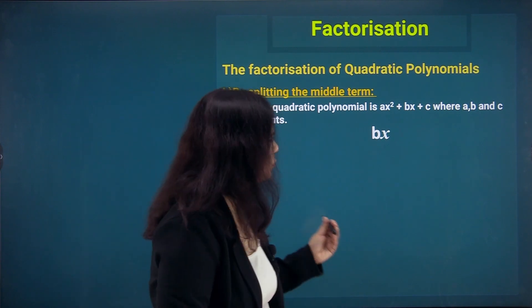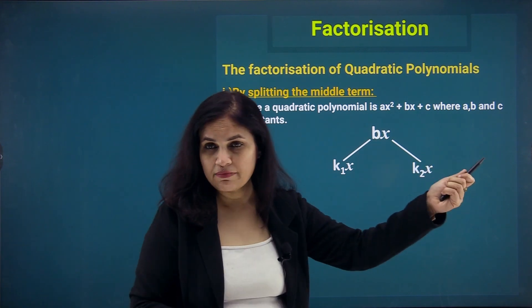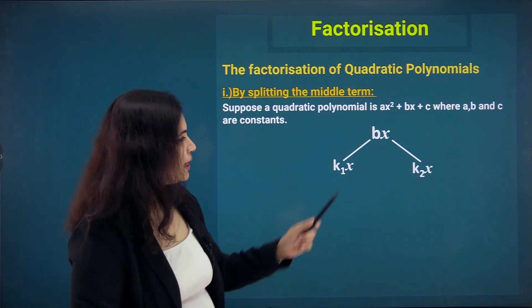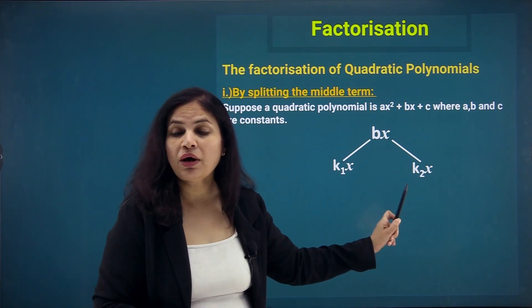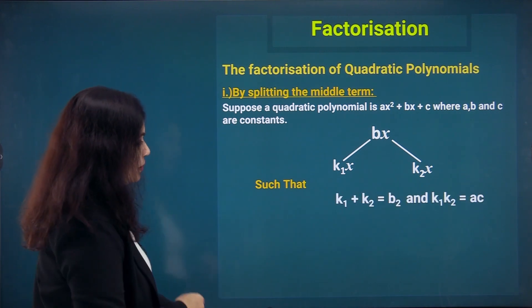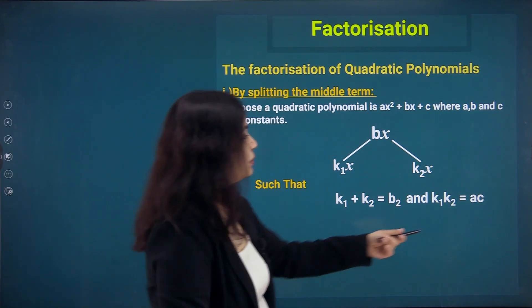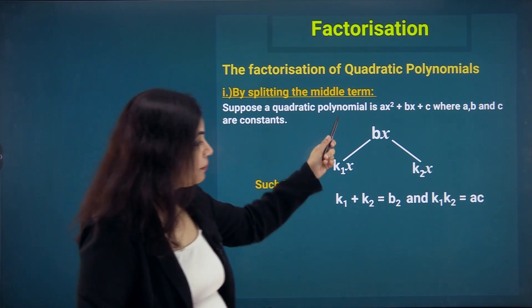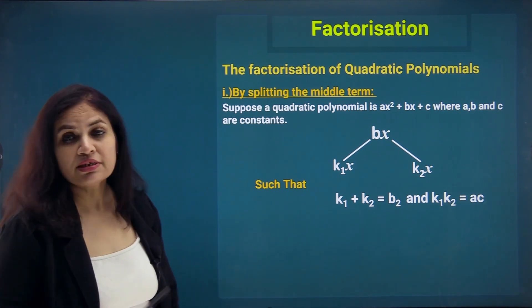In the middle term split, we split up the middle term bx into two parts k1x and k2x, where k1 and k2 are integers such that k1 plus k2 gives you b, and k1 times k2 gives you the product a times c. It is a little confusing without an example, so let us do it with different examples.